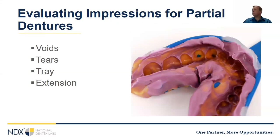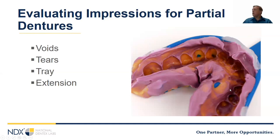With your partial denture impression, make sure there are no voids where the partial will be in contact. Make sure you don't have tray contact and that all your landmarks are visible on the case — for example, ensuring you've picked up the vestibule. Partial impressions are among your most difficult because you really have to pick up everything.